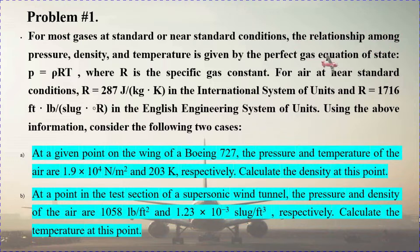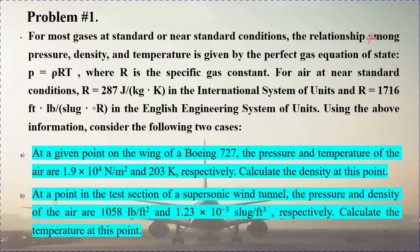Using the above information, consider the following two cases. Case A: At a given point on the wing of a Boeing 727, the pressure and temperature of the air are 1.9 times 10 to the power of 4 N per meter squared and 203 Kelvin respectively. Calculate the density at this point.